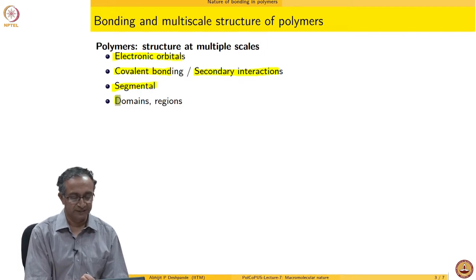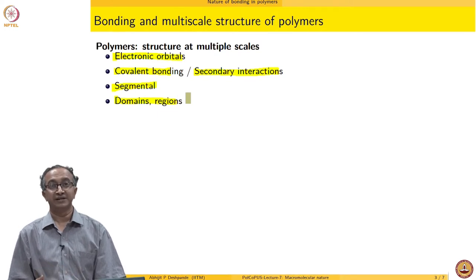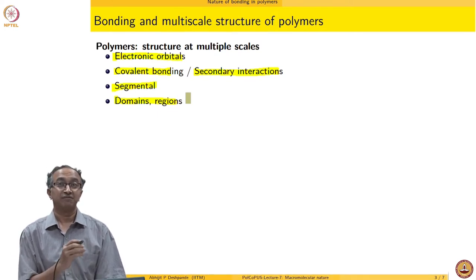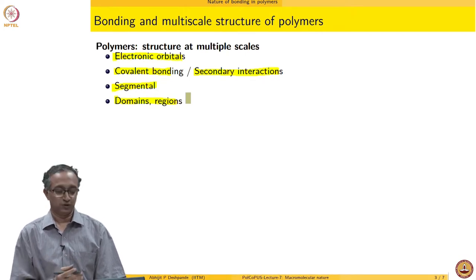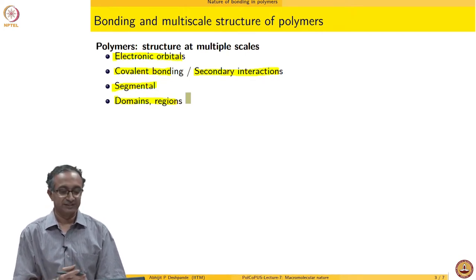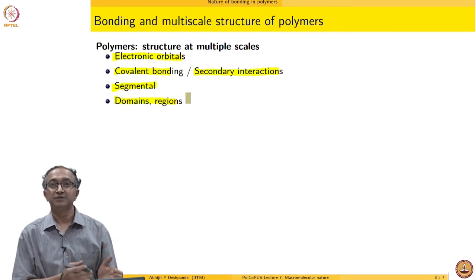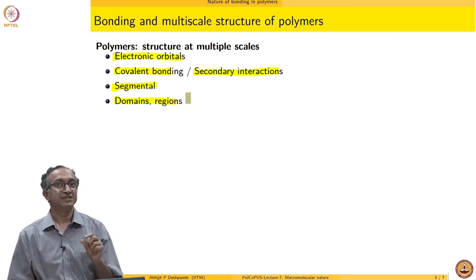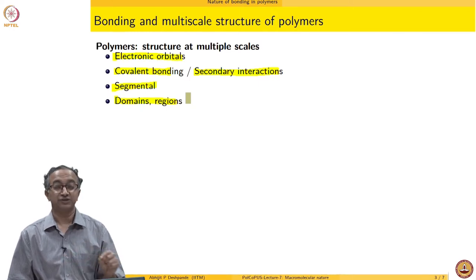Then of course we have domains and regions. If there is a mixture of two polymers, there could be a domain of one in another. If it is a semi-crystalline polymer, then you could have crystalline regions and amorphous regions. So these are some aspects of multiple scales. When we say scales, we are meaning length scale.